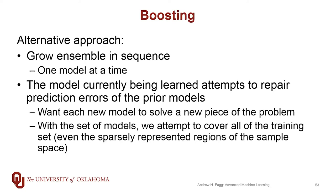So we learn one model, then another model, and then another model. And at each step, the learning process for one model has the goal of trying to repair the errors that have been made in the previous models. One thing we can get out of this is that the new models we're introducing can help to solve new pieces of the problem that haven't been covered very well. And in particular, as we add more and more models, we can build this patchwork of individual models that can capture different parts of our feature space.